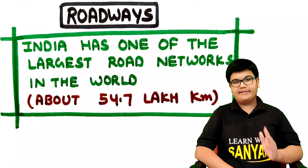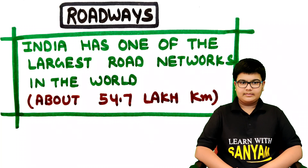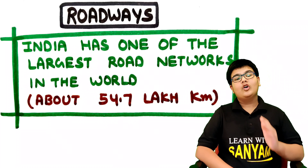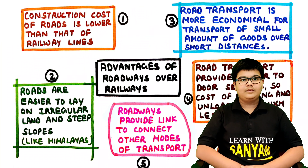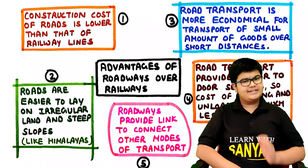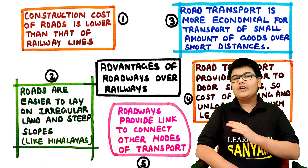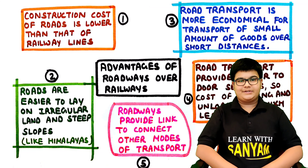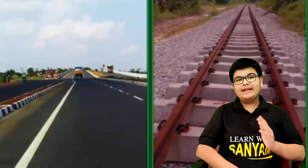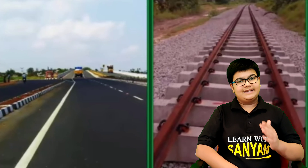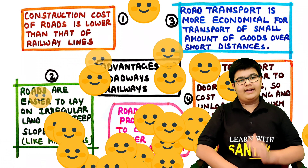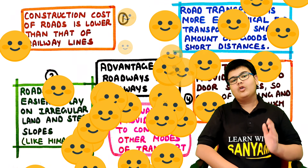Let's start with land transport. First, roadways. India has one of the largest road networks in the world, with about 54.7 lakh km of road network. So, can you tell me which is better — roadways or railways? Roadways are better than railways, and this has many reasons. Let's see the advantages of roadways over railways.